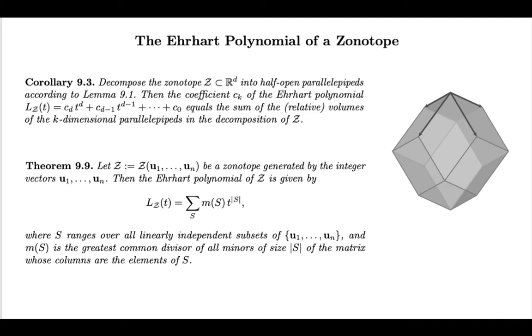My goal now is to explain how to get from this result to theorem 9.9 that you can see here. It's really the same formula, but written in a practical way. I'm looking at the matrix that one can construct from the generators of the zonotope. If my zonotope is the Minkowski sum of the vectors u1 through un, I make them the columns of a matrix.